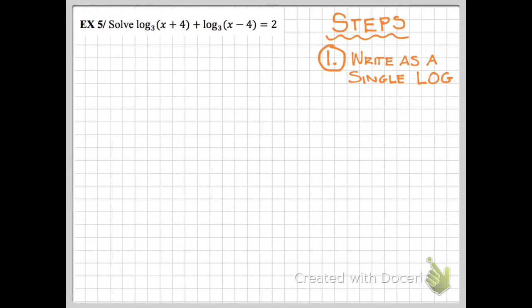But we do know we can write it as a single log, so to do that I use the product property. In this case, I write that as x plus 4 times x minus 4 equals 2, and I put that inside a log base 3.